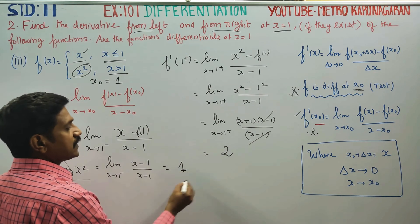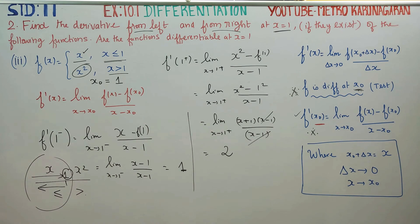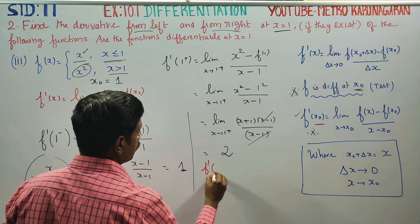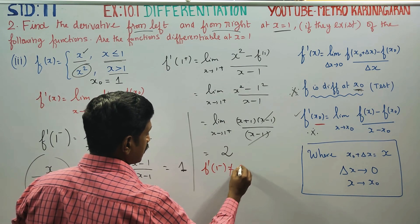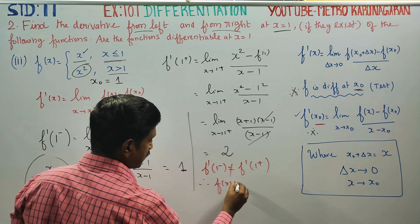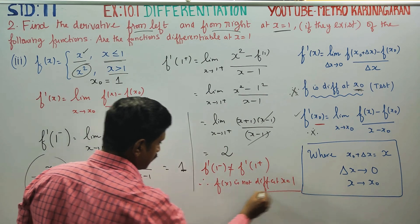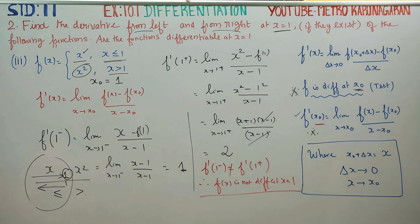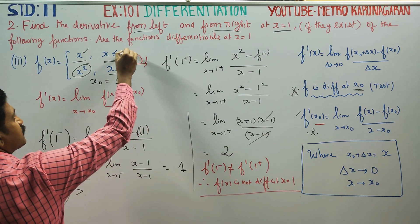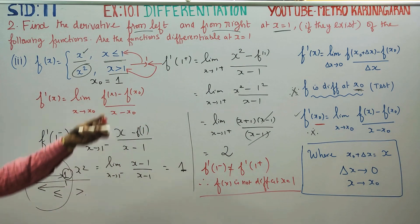The left-hand answer is 1 and the right-hand answer is 2. Since f dash of 1 minus is not equal to f dash of 1 plus, therefore f(x) is not differentiable at x equal to 1. For the left-hand direction we used the first formula and for the right-hand direction we used the second formula.